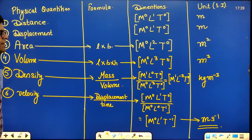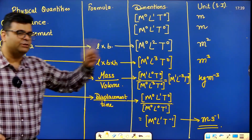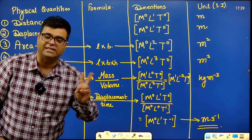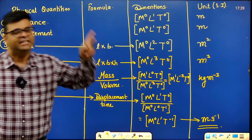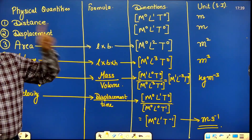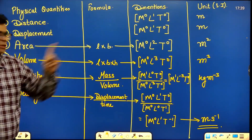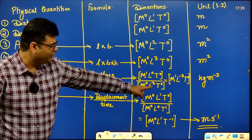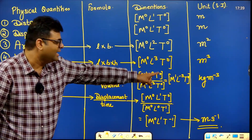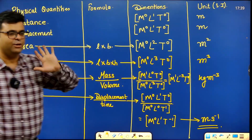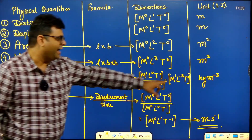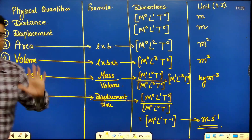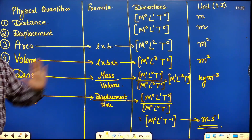Combining density: M¹⁻⁰ L⁰⁻³ T⁰⁻⁰ gives M¹L⁻³T⁰. These are the dimensions of density.